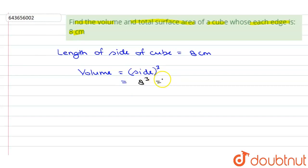8 times 8 is 64 and 64 times 8 will give us 512. So the volume of the cube of side 8 cm is 512 cm cubed.